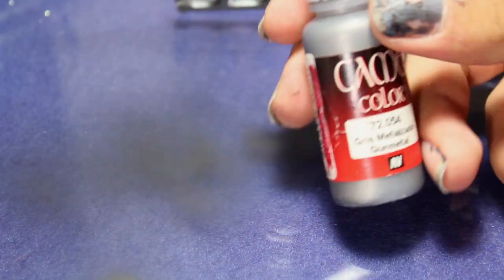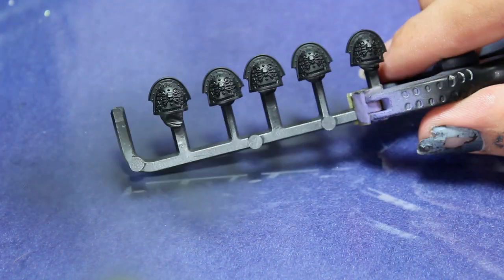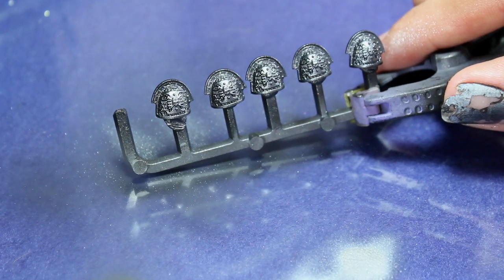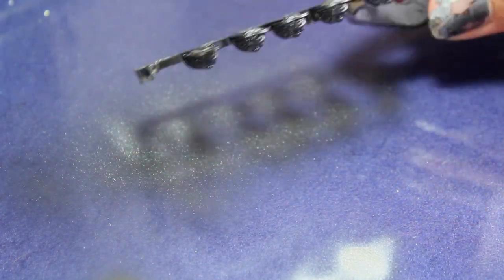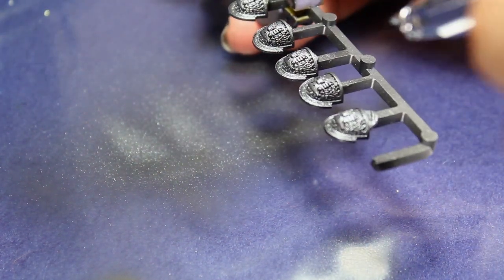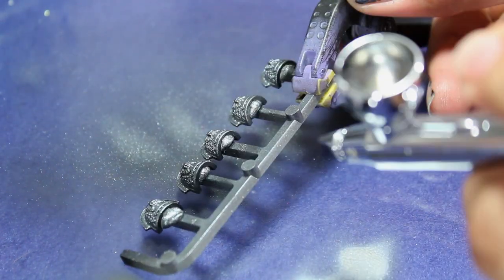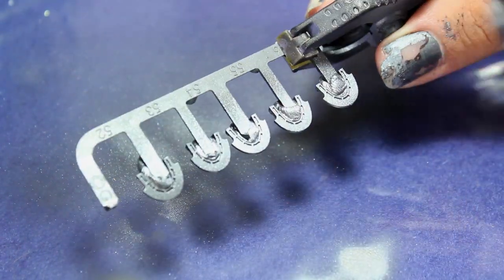Then I did a base coat of Vallejo gunmetal. I'm using an airbrush because specifically these Deathwatch shoulder pads have a lot of detail in them, and the airbrush is going to make sure that the details don't get lost in the paint.